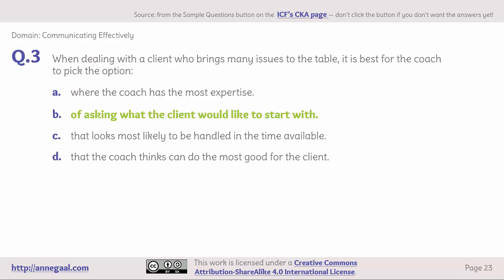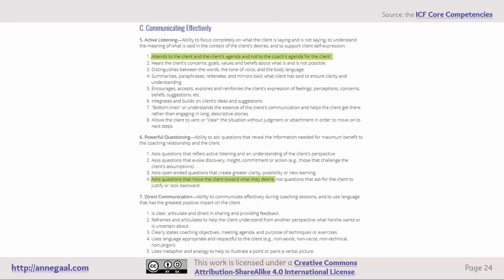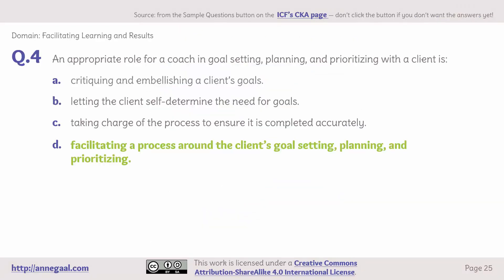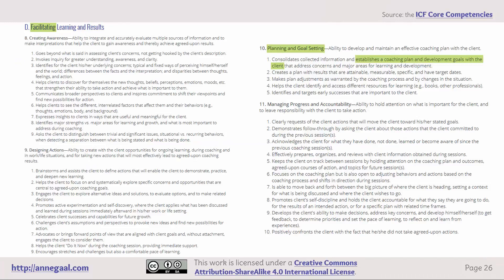Domain: communicating effectively. Question 3 — when dealing with a client who brings many issues to the table, the answer is B: ask what the client would like to start with. This comes from the ICF core competencies, Section C, communicating effectively: the coach attends to the client and the client's agenda, not the coach's agenda for the client; the coach asks questions that move the client toward what they desire. Domain: facilitating learning and results. Question 4 — an appropriate role for a coach in goal setting, planning, and prioritizing is D: facilitating a process around the client's goal setting, planning, and prioritizing. This comes from Section D, facilitating learning and results: establishes a coaching plan and development goals with the client.